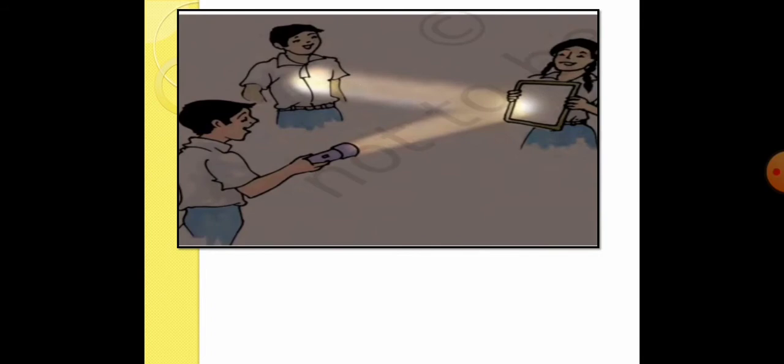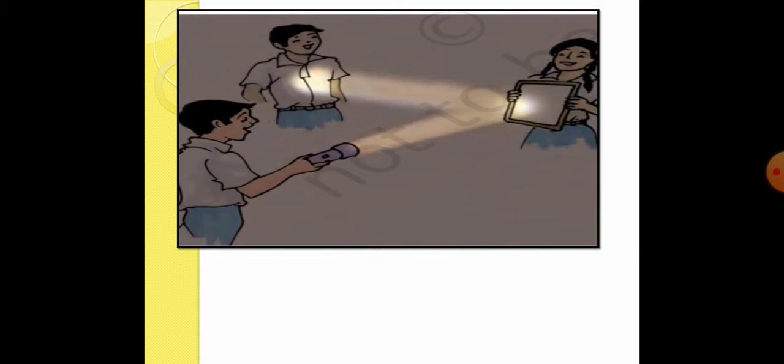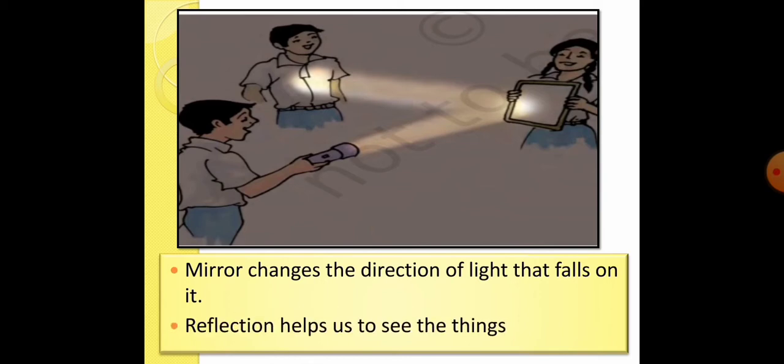Also, you can see the direction of incident rays and reflected rays is totally different. Okay, so mirror changes the direction of light that falls on it. So, overall reflection helps us to see the things. Without reflection, we cannot see the things.